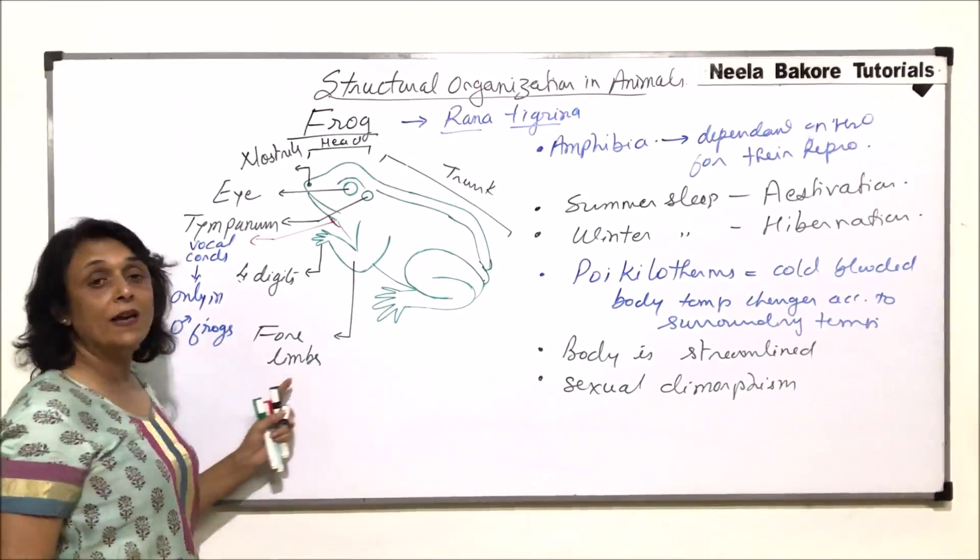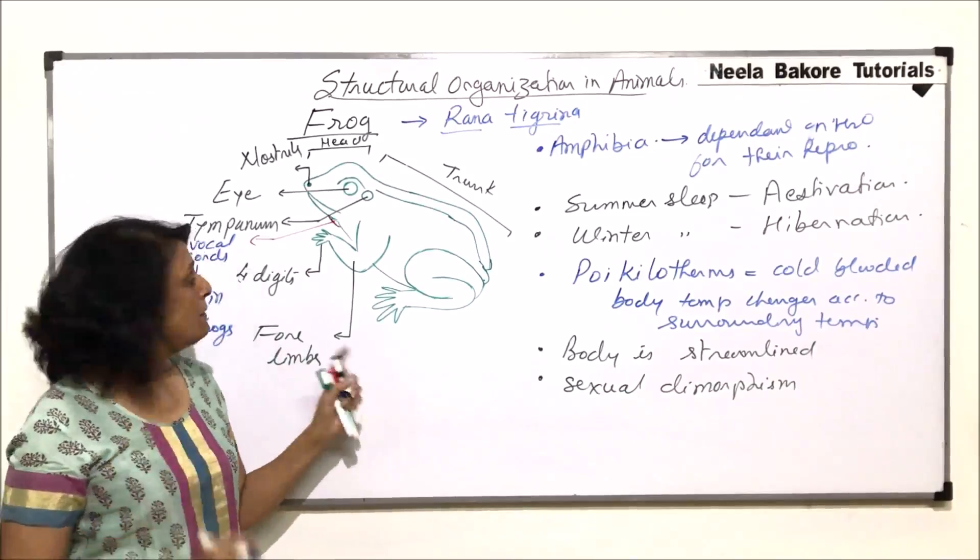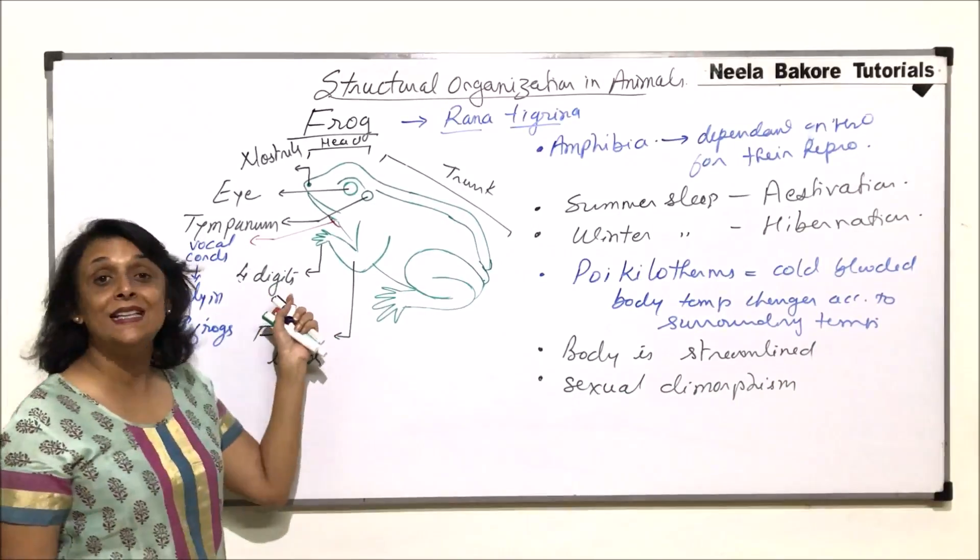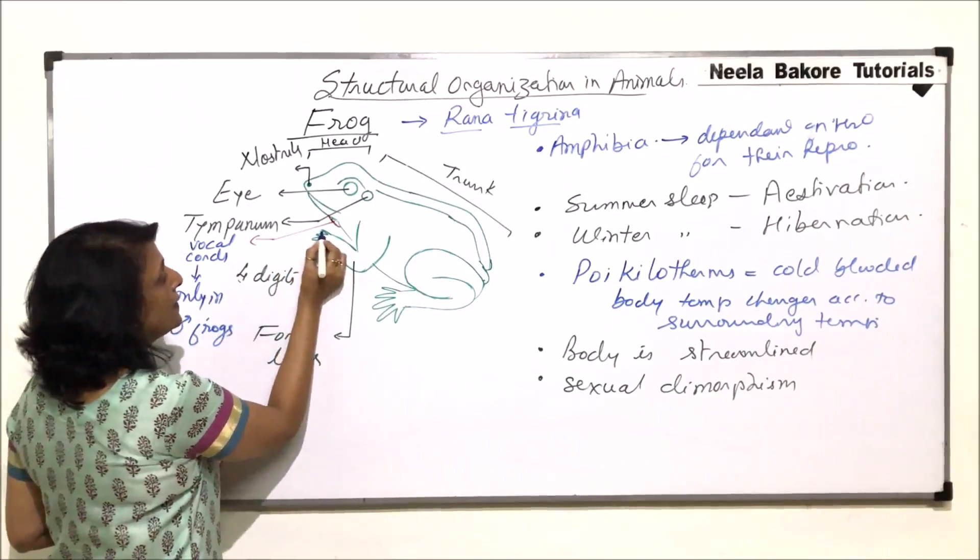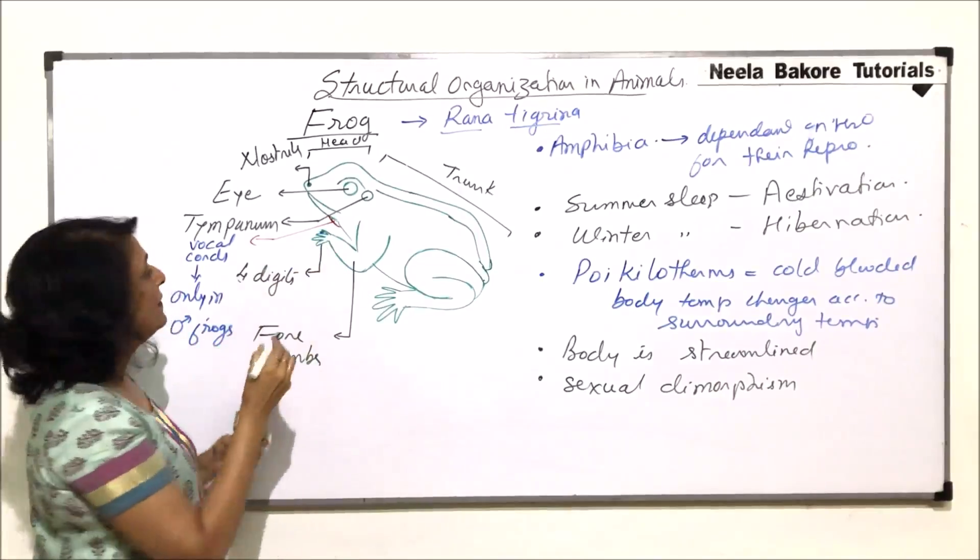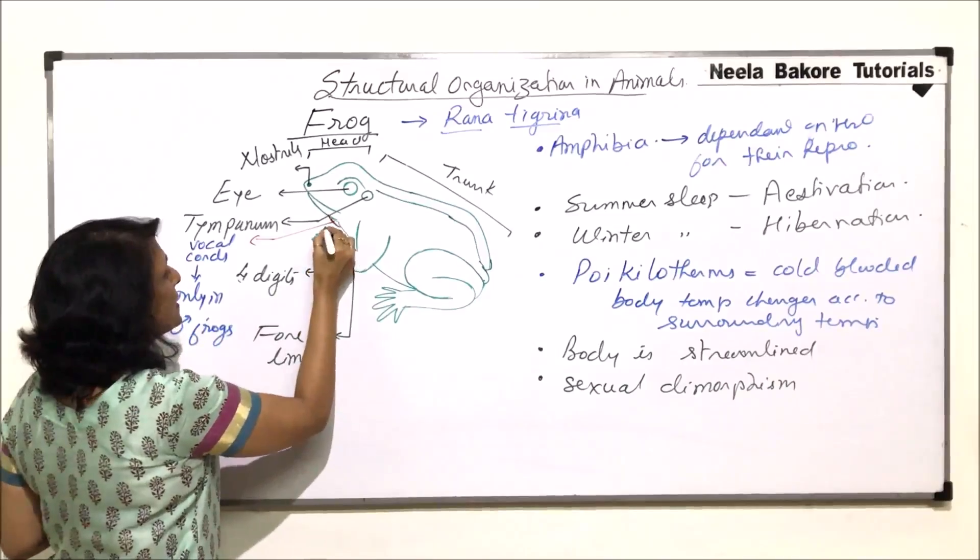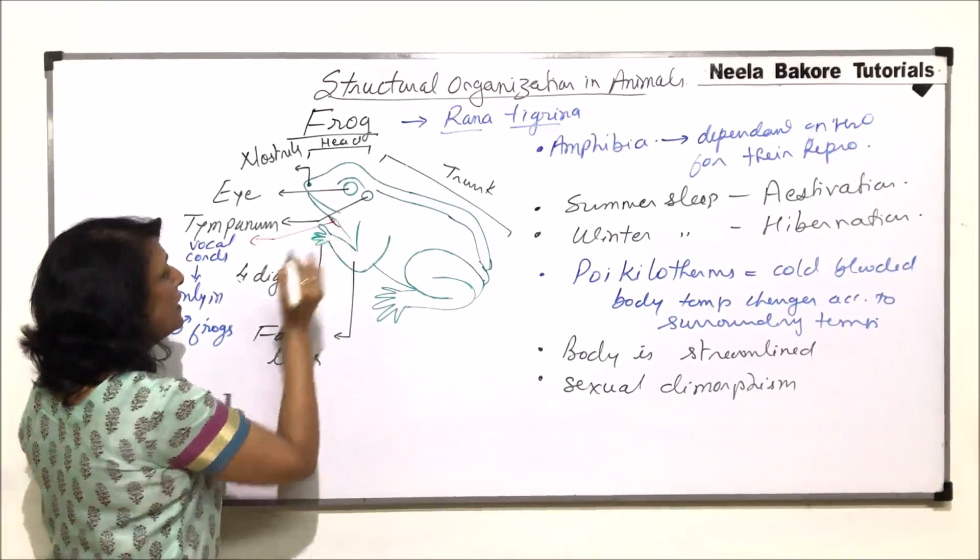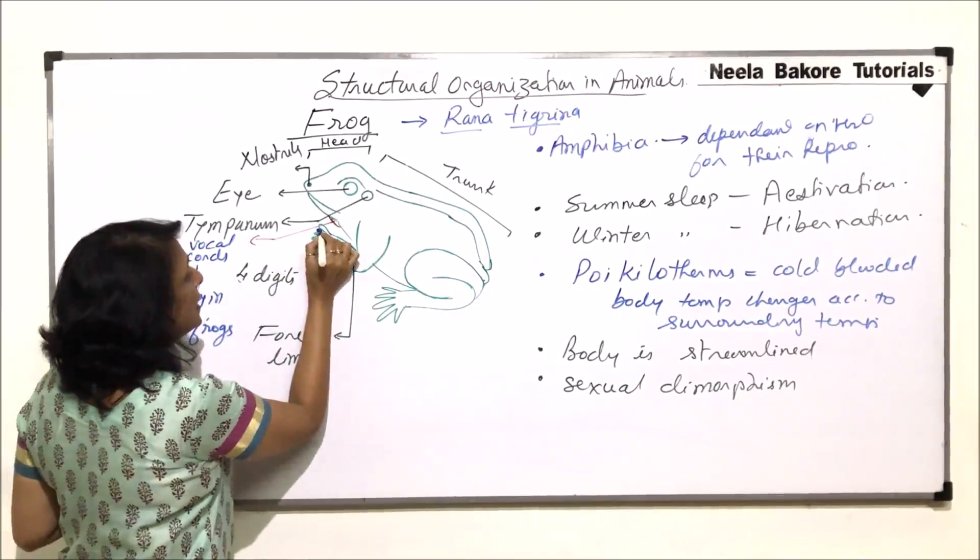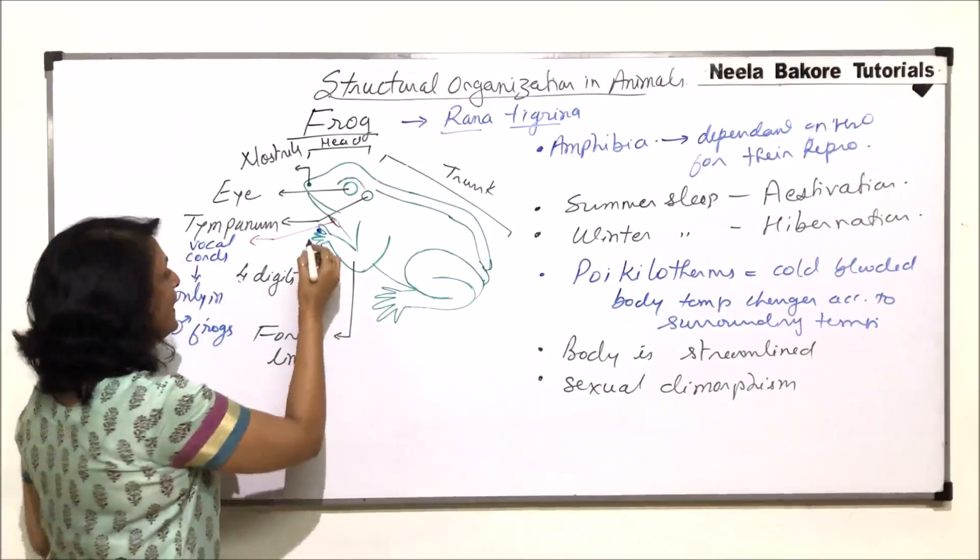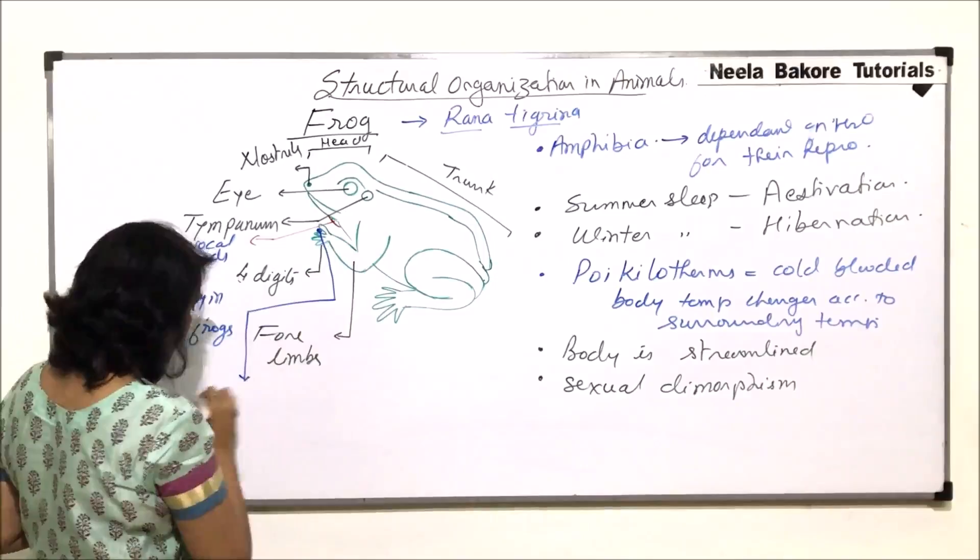So this is one structure on the basis of which we can distinguish these males and females. The second difference is in the digits of the forelimb. There are four digits. Just beneath the first digit, there is a structure. I am going to make it slightly bigger so that we are able to see. This is the first digit, the second, third and the fourth.